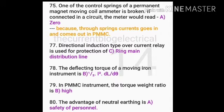If one of the control springs of a permanent magnet moving coil (PMMC) ammeter is broken and the meter is connected in a circuit, the meter would read zero, because current enters and exits through the springs in a PMMC instrument.